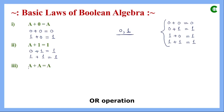The third law is a plus a equals a — if we add a Boolean variable with itself, the result is that variable only. If the value of a is 0, then 0+0=0. If the value of a is 1, then 1+1=1. When the variable is 0 the result is 0, and when it is 1 the result is 1, so a plus a equals a.